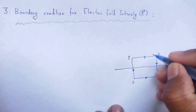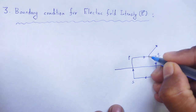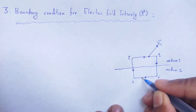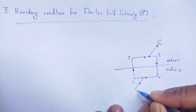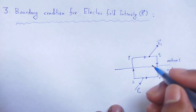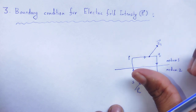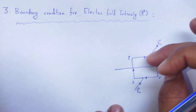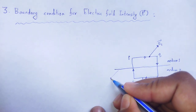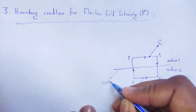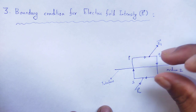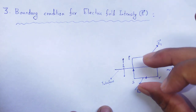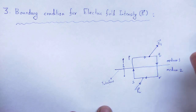At medium 1, there will be a point with electric field intensity E vector. At medium 2, in the same direction, electric field E vector. It has two components: one is the tangential component, meaning parallel to the interface, and another one is the normal component, which is normal to the interface. The height of that particular loop is h. By using that loop, we can evaluate the boundary condition for electrical intensity E vector.